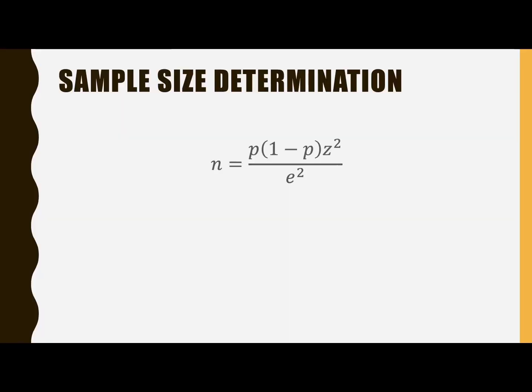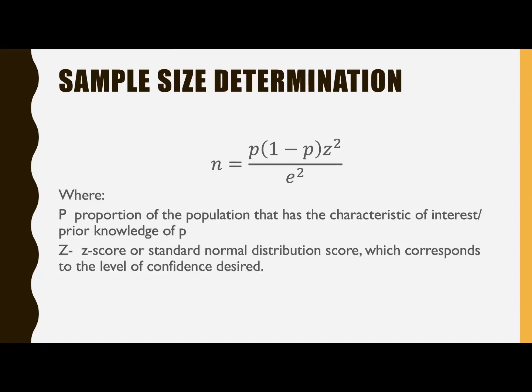We have the formula: n equals P times 1 minus P times the standard score squared over the margin of error squared. Where P is the proportion of the population that has the characteristic of interest or your prior knowledge of P from a previous study. Z is the standard normal distribution score which corresponds to the level of confidence desired, it can be 99%, 90%, or 95%. And E is the margin of error or the maximum allowable error.